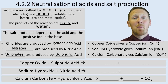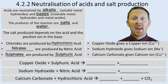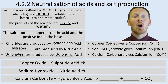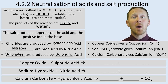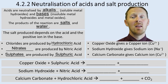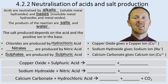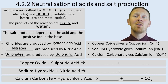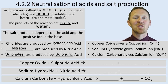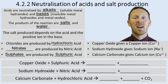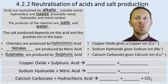The metal part comes from the base or the alkali you've used. If you've used copper oxide, then copper oxide gives a copper ion with the formula Cu2+. If you use sodium hydroxide, sodium hydroxide gives the sodium ion, Na+. If you use calcium carbonate, or limestone, it gives the calcium ion, Ca2+. Note: the slide shows Cu2+ — that's wrong, it should be Ca2+.